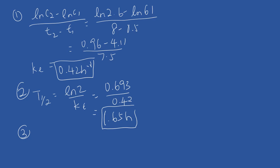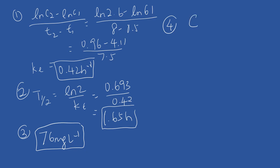For question number three, extrapolate the graph — use your ruler on the straight line and look at the y-intercept. You should get approximately 76, depending on how you read the graph, so a slightly different answer is acceptable. For question number four, since we have the initial concentration, we use C equals dose divided by volume. The initial concentration is 76; divide the dose of 300 to find the volume, which should be around 3.94 liters.